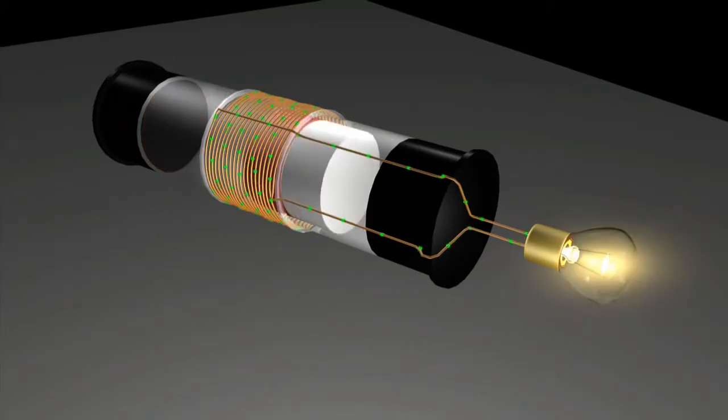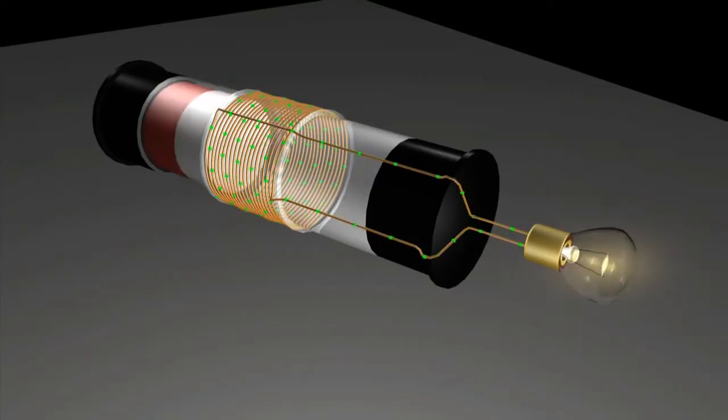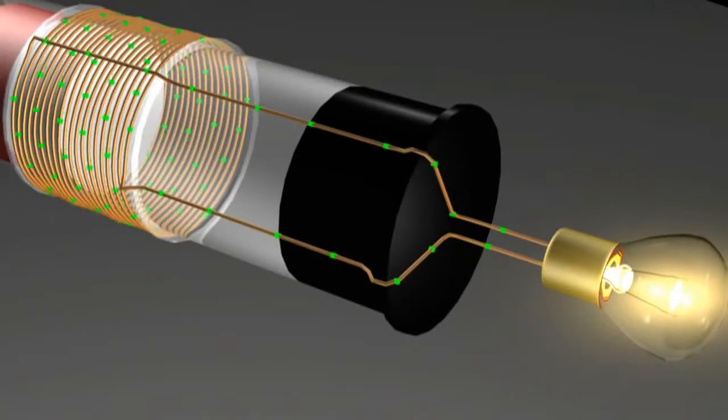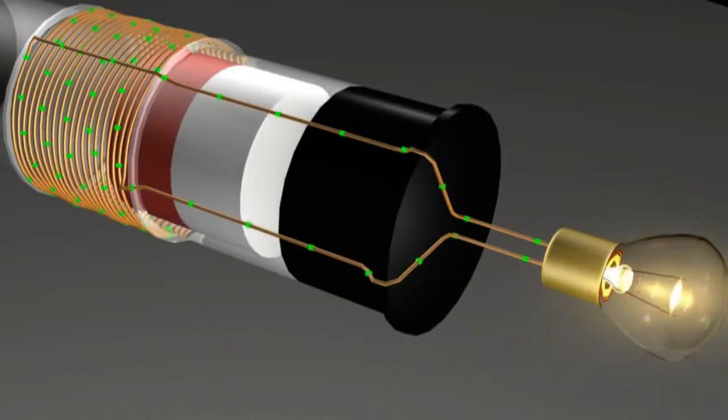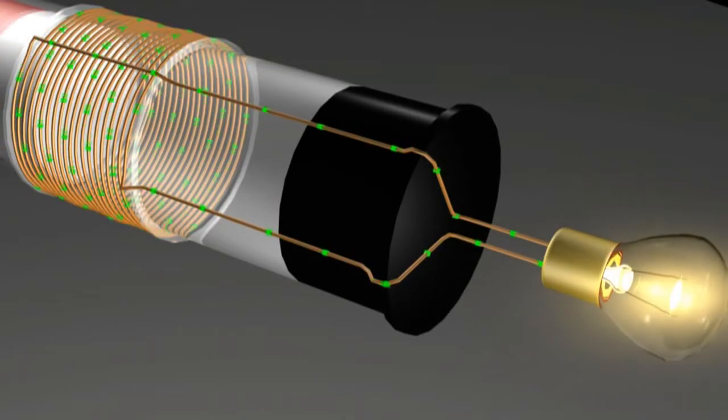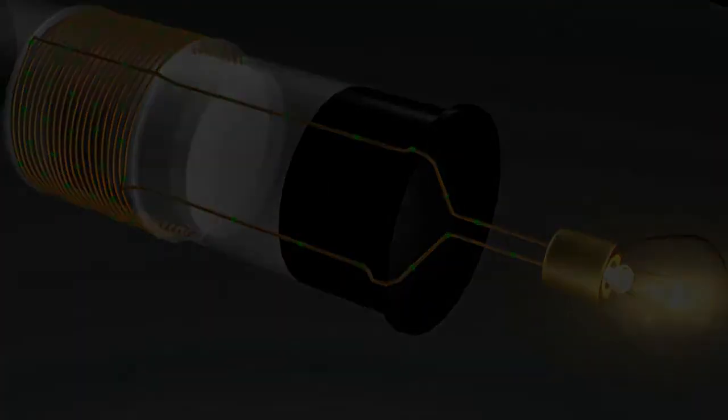As the magnet passes through the coil of copper wire, the magnet's magnetic field cuts the turns of the coil, and this induces a current flow in the coil. When the magnet moves in the other direction, our current is induced again, but this time in the opposite direction.